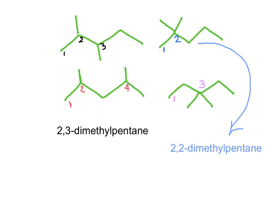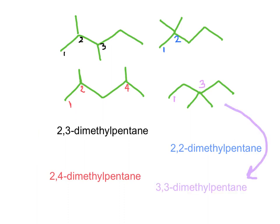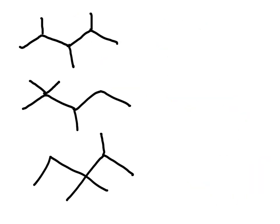In the next isomer, both methyl groups are in the same position. Every time we write a name we will have as many numbers as branches. In the third structure the methyl groups are in positions two and four; I can label this as one and two, but it makes no difference because this molecule is symmetric. The last isomer has both methyl groups on carbon number three, and the name of that compound is 3,3-dimethylpentane.